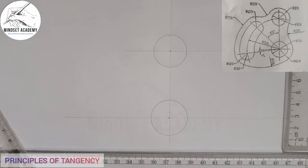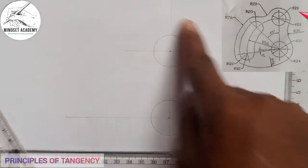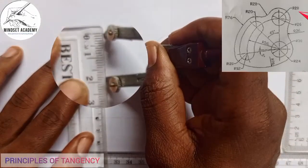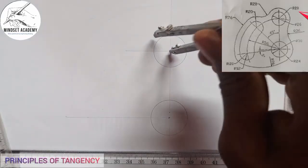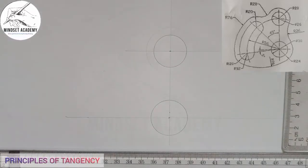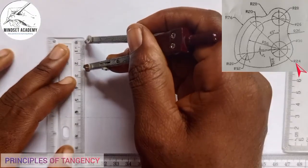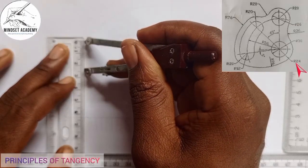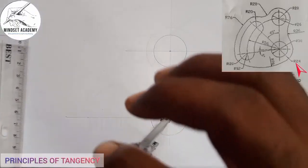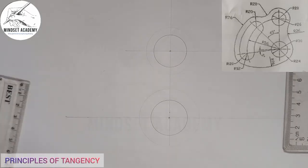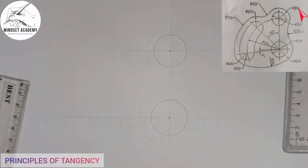There is another circle surrounding the first circle — it has a radius of 20. I'll measure radius 20 on my ruler, place it at the center point, and draw a faint circle. There is also a bigger circle with a radius of 24. I'll measure radius 24 on my ruler and draw that circle as well. So we now have circles of radius 20 and radius 24.